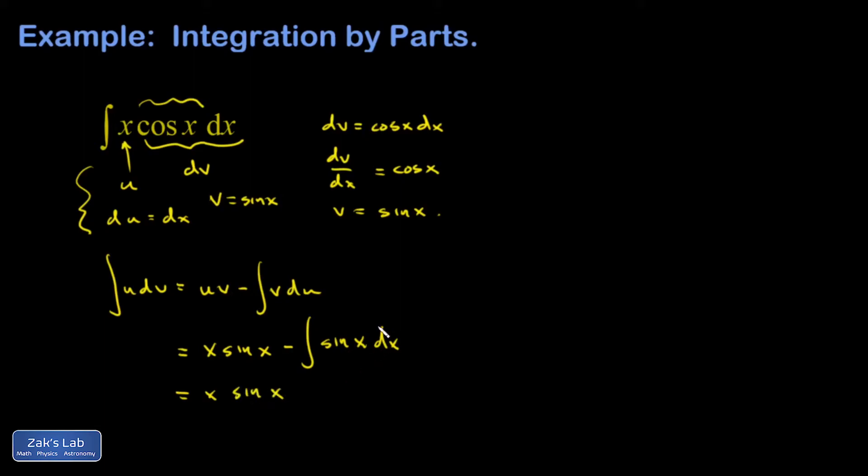Then I just have to guess the antiderivative of the sine function, which is the negative of the cosine function. So I end up with x sine x plus cosine x. It's an indefinite integral, so I should have a plus c on there.